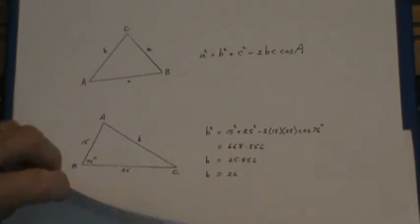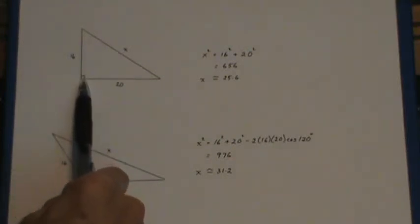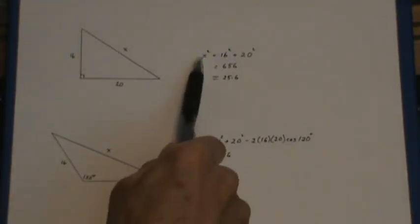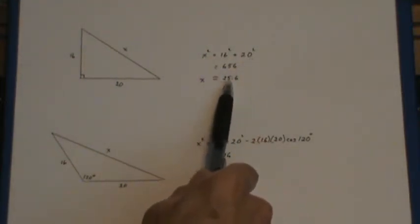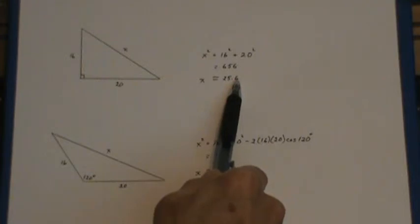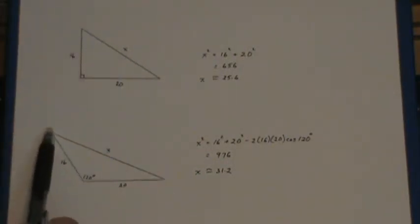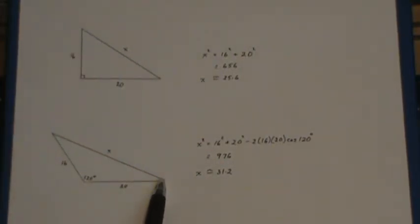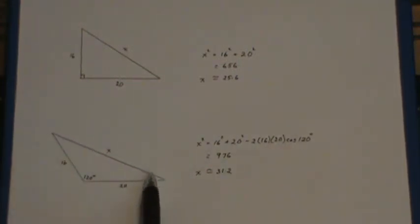Now just to show you the flexibility of this formula, here's a situation where we've got a right angle triangle and of course it's the x squared equals 16 squared plus 20 squared and that gives us 25.6. Now you see if you make that angle larger, make it 120 degrees, obviously the hypotenuse now becomes a longer side and you're probably wondering why a subtraction here would give you a larger number.